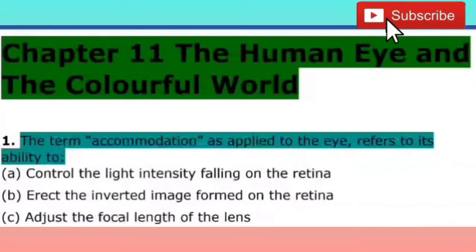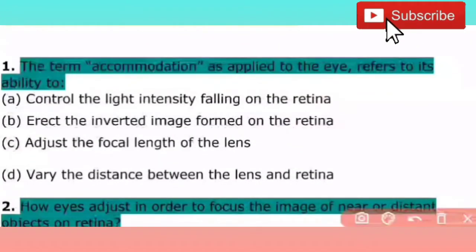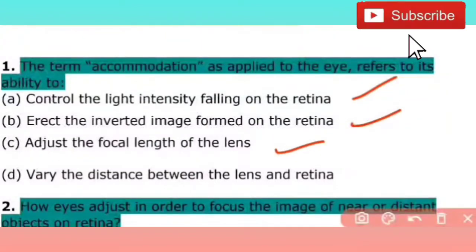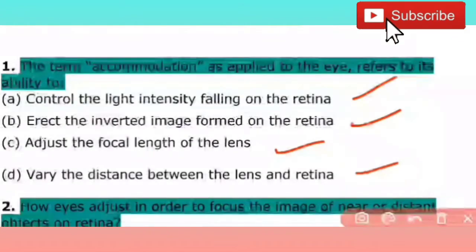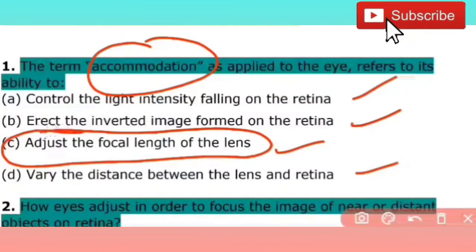This chapter is 'The Human Eye and the Colorful World.' The first question is: the term accommodation as applied to the eye refers to its ability to — with 4 options: control the light intensity falling on the retina; erect the inverted image formed on the retina; adjust the focal length of the lens; vary the distance between the lens and retina. That power is called accommodation. So the right answer is C.